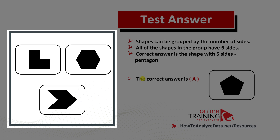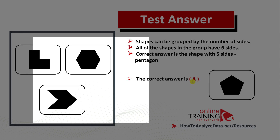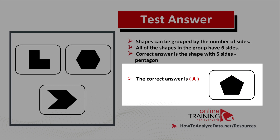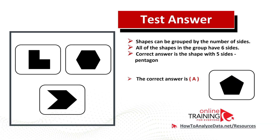So the correct answer here is choice A — the pentagon — which only has five sides: one, two, three, four, five. Hopefully you've nailed this question, answered it correctly, and now know how to answer similar questions and problems on the test.